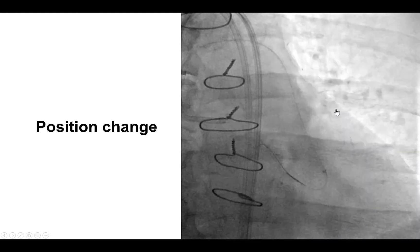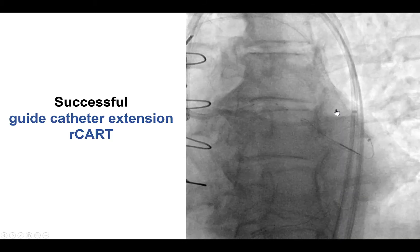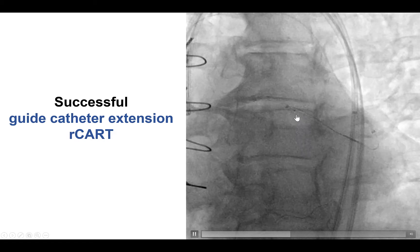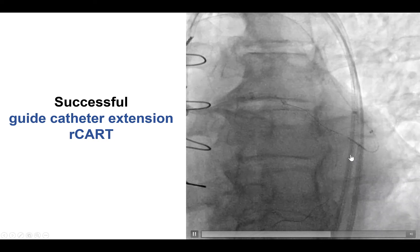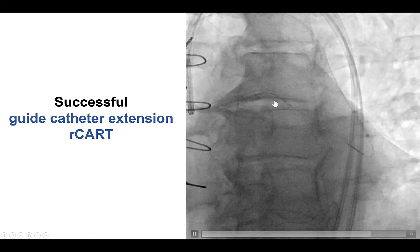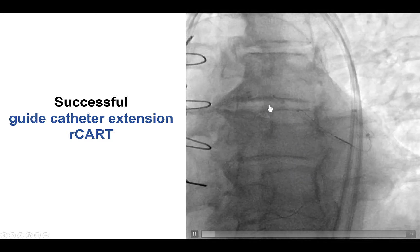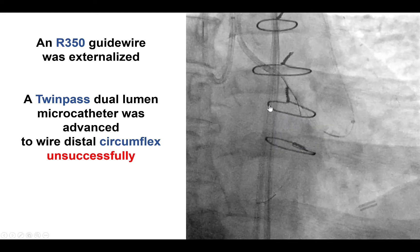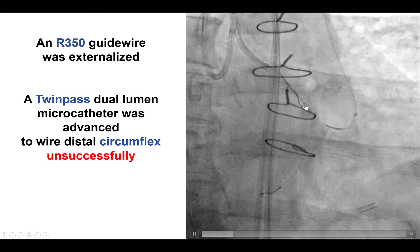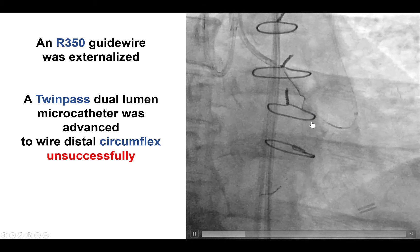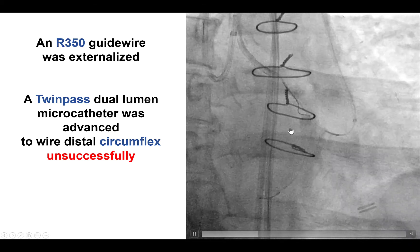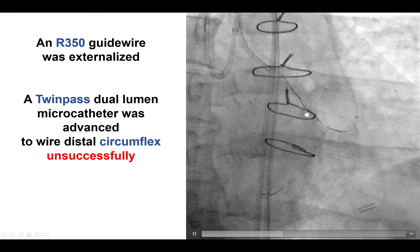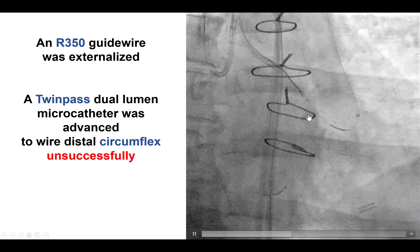After multiple attempts, we decided to change the re-entry zone and tried to do re-entry a little higher up. We advanced the retrograde wire in a different plane, and were able to successfully advance the retrograde guide wire into the guide catheter extension, then externalize an R350. Our plan was to advance a guide wire through a dual-lumen microcatheter into the circumflex, which was the vessel of origin — not the OM1 — but unfortunately this was unsuccessful, confirming that we had dissected earlier at the bifurcation of the OM1 and the circumflex branch.